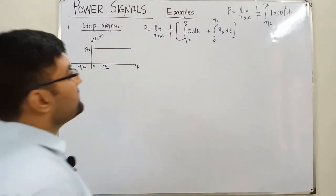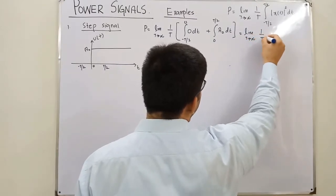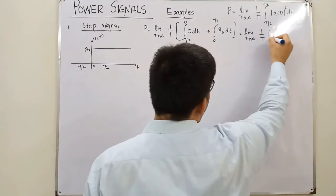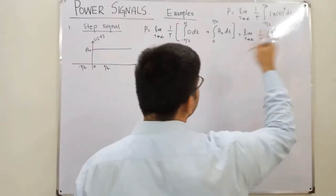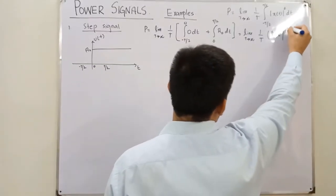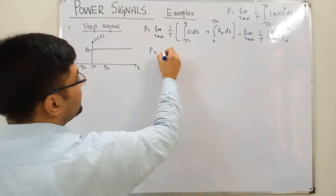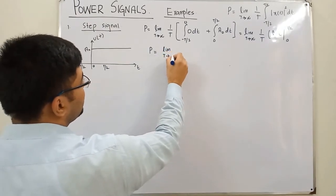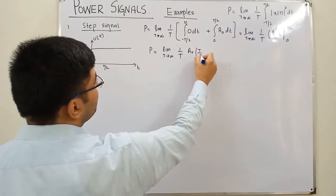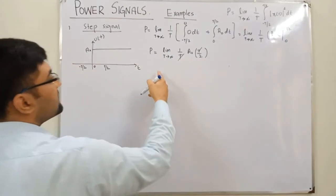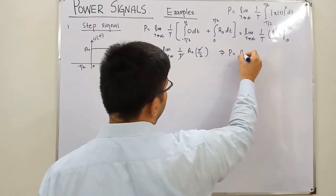The integral from -T/2 to 0 gives 0. Then we have limit T tending to infinity of (1/T), with a₀² outside the integral. Integrating 1 with respect to t gives t, evaluated from 0 to T/2, so we get a₀² times T/2.